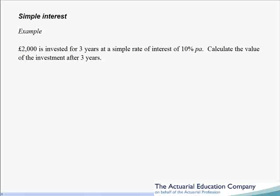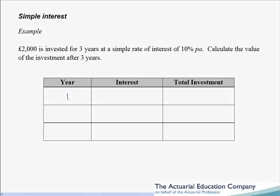Let's put this in a table. In our first year at the beginning of the year we start with £2000. We've got an interest rate of 10% per annum, so 10% of 2000 gives us interest of £200. So at the end of year one we will have our original investment of £2000 plus our interest of £200, giving a total investment of £2200.